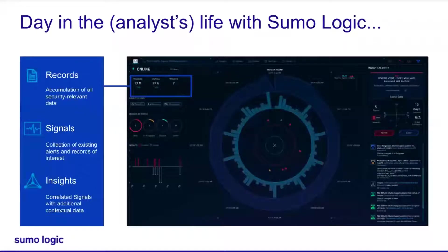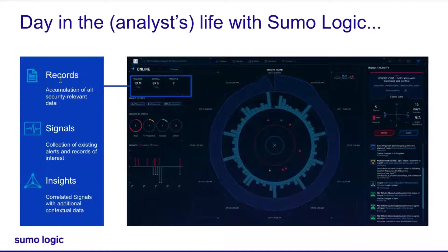Before I get into the SIEM interface, I'd like to quickly show you the three major areas we'll discuss: records, signals, and insights. Records are similar to the total number of logs coming into the platform — various events, logs, etc. These records give rise to signals, and those signals in turn give rise to insights. Most platforms stop at the signal level, whereas we automatically correlate signals to provide you insights, which we'll see as part of the webinar.